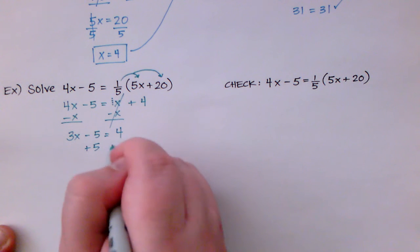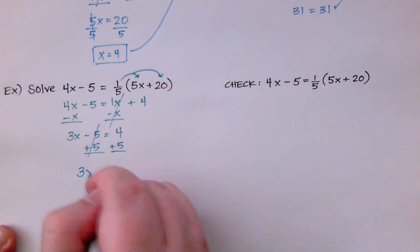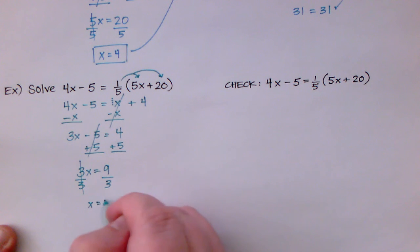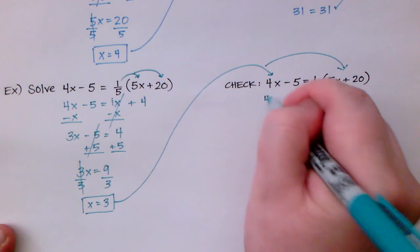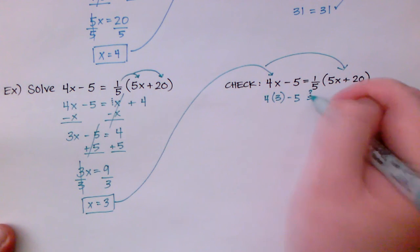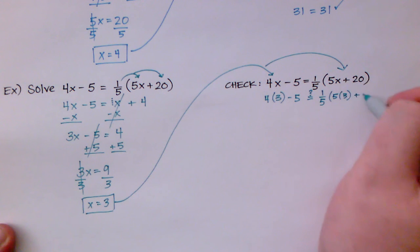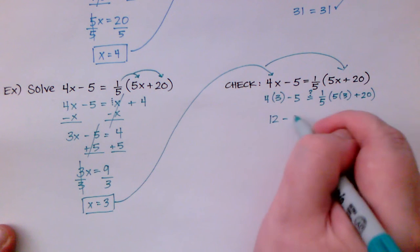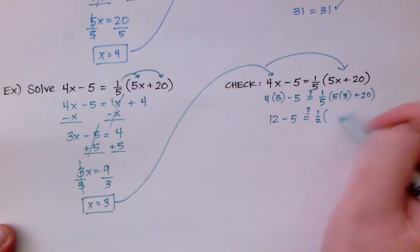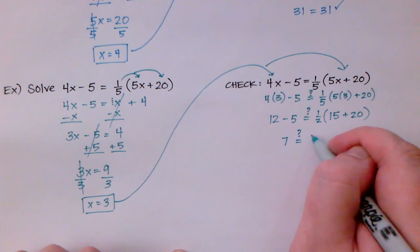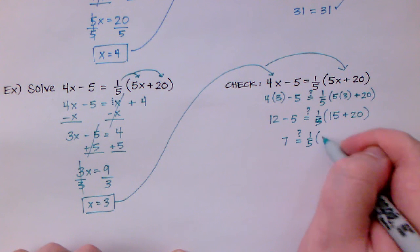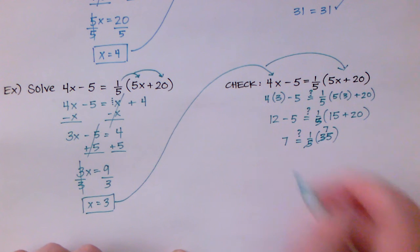I'm going to add the 5 to both sides to move it away from the 3x. And now 3x is equal to 9. One more step. Divide both sides by 3 and x is now equal to 3. All right we did it. Not bad at all. Let's go ahead and plug this in. Make sure it works out. 4 times 3 minus 5. Is that equal to this messy side, 1 fifth times 5 times 3 plus 20? 4 times 3 is 12 minus 5. The other side is 1 fifth times 15 plus 20. 12 minus 5 is 7. Is that equal to the other side? Oops. 1 fifth of 35. Yes indeed. That is 7. On both sides I am done. Awesome.